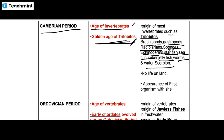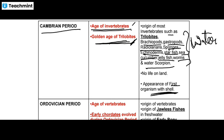During the Cambrian period, there was no life on the land — only life in the water. Invertebrates originated in the Cambrian period. This was also the appearance of the first organisms with a shell. It is the age of Invertebrates and the golden age of Trilobites.